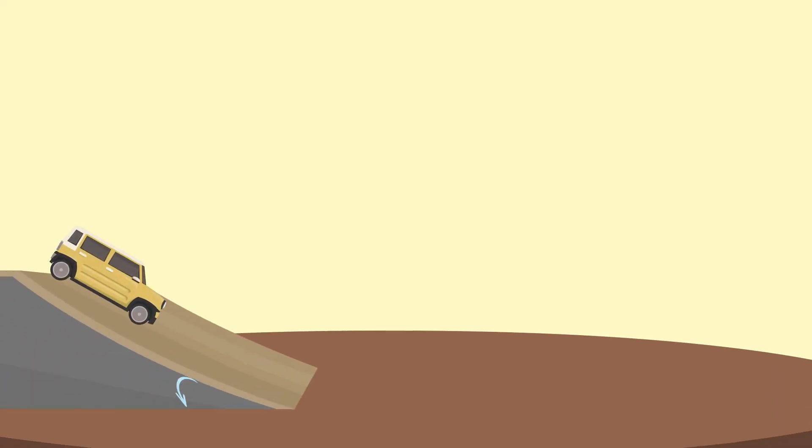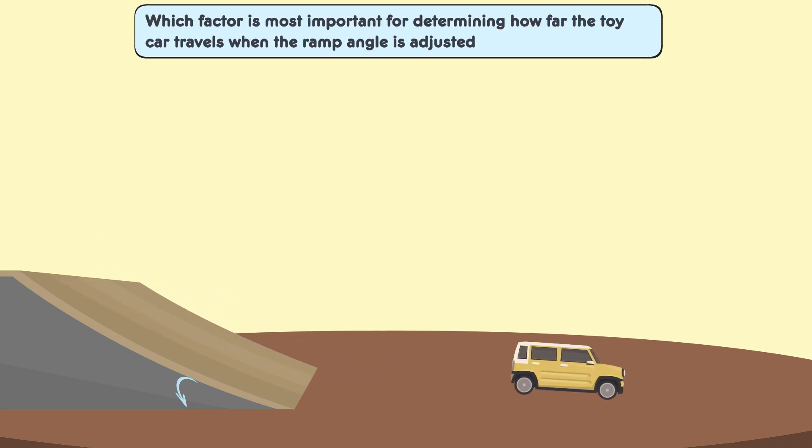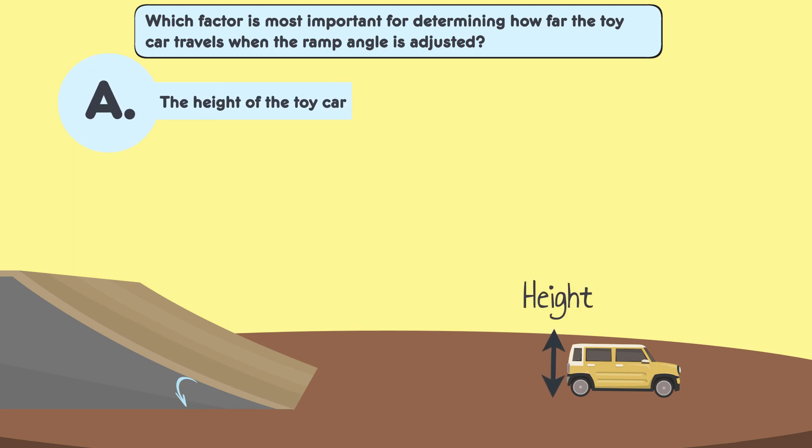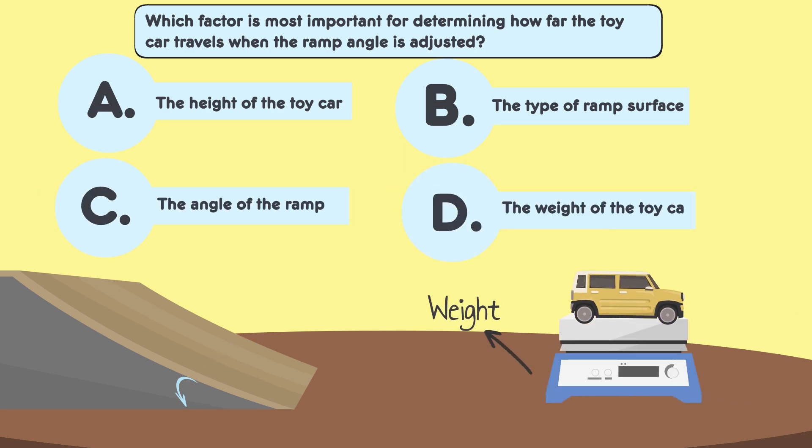Now let's evaluate our understanding with a key question. Which factor is most important for determining how far the toy car travels when the ramp angle is adjusted? A. The height of the toy car. B. The type of ramp surface. C. The angle of the ramp. D. The weight of the toy car.